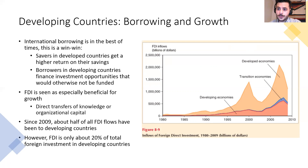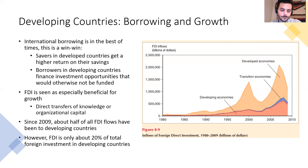FDI has historically been biased towards developed, high-income countries like the United States, Western Europe, and Canada. But increasingly, FDI has been directed towards developing countries — about half of all FDI flows since 2009 have been in developing countries, making it a more quantitatively important source of growth. However, it is still small — today it's only about 20% of total foreign investment in developing countries, so foreign portfolio investment and direct borrowing and lending are still more common.